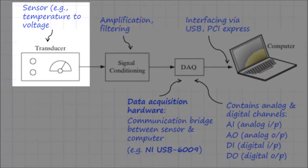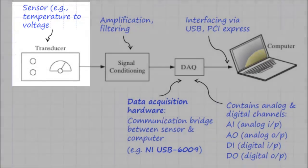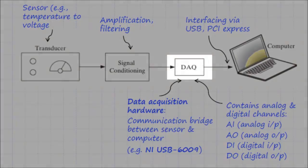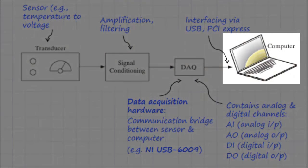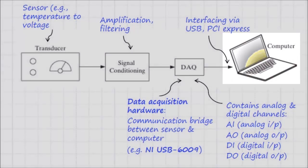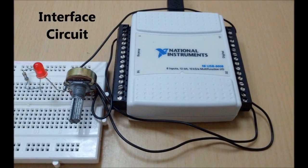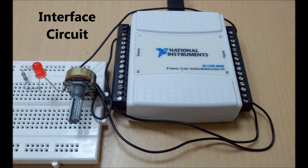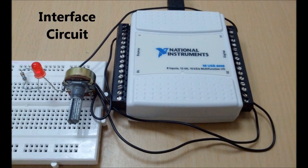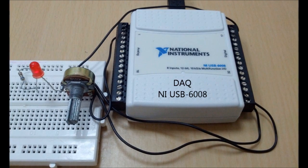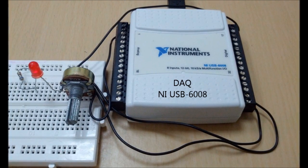The main components of a typical data acquisition system are a transducer such as a sensor, signal conditioning in the form of amplification and filtering, the DAQ hardware, and the computer. The interface circuitry used for data acquisition is made of the following components: the DAQ hardware, namely NI USB-6008 from National Instruments.